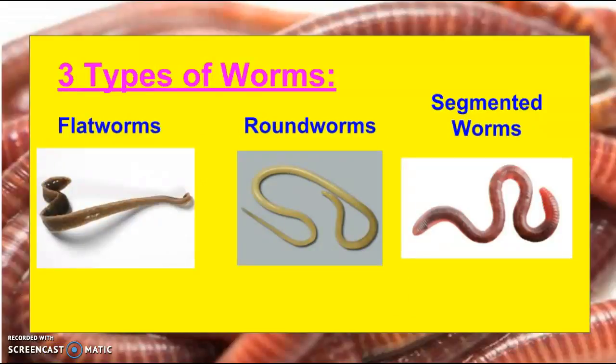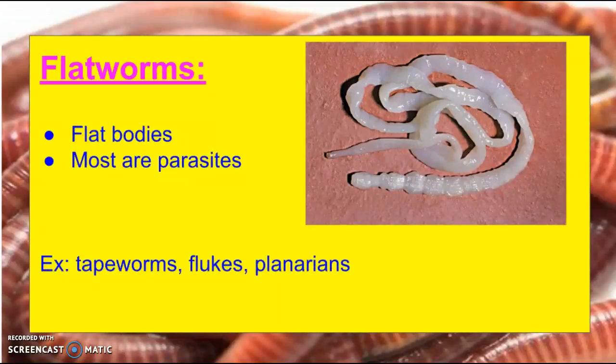So there are three types of worms: flatworms, roundworms, and segmented worms. Flatworms have flat bodies, just like the name implies. Most of these are parasites, so examples would be tapeworms, flukes, and planarians.